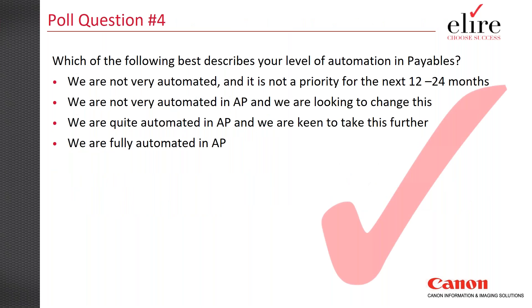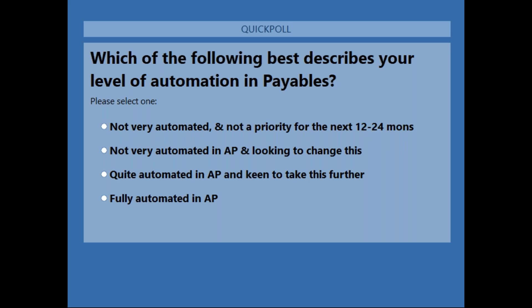Our final poll question: which of the following best describes your level of automation in payables? Options are: we're not very automated and it's a priority in the next 12 to 24 months; we're not very automated and looking to change this; we're quite automated but looking to take it further; or we're fully automated in accounts payable — which means you're already in the future, though the future always changes.